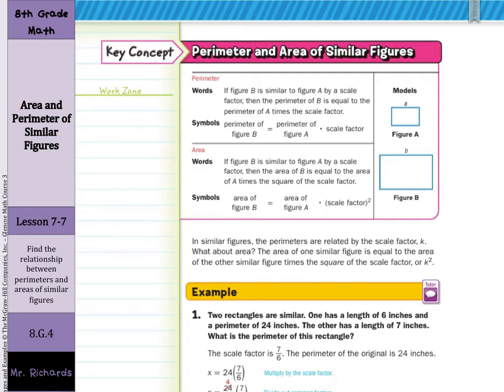In similar figures, the perimeters are related by a scale factor K. What about area? The area of one similar figure is equal to the area of the other similar figure times the square of the scale factor, or K squared.